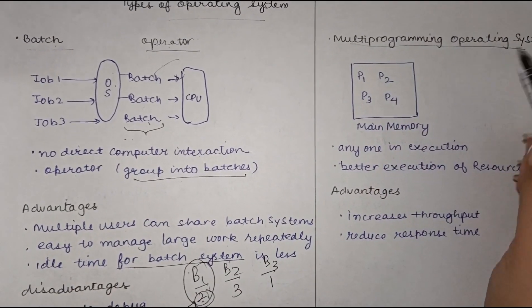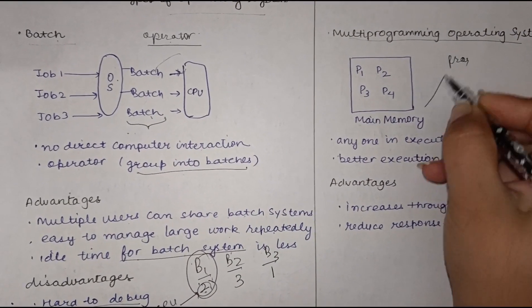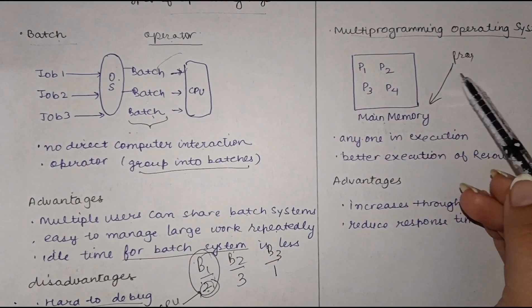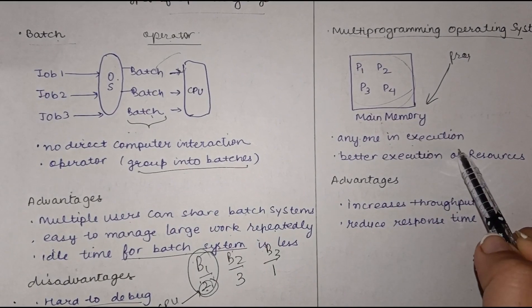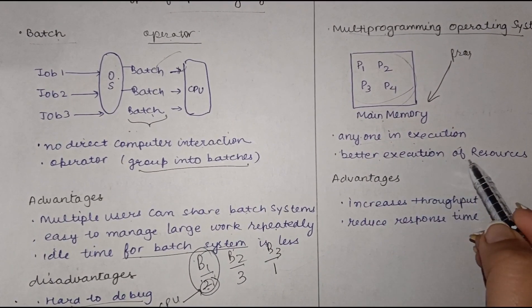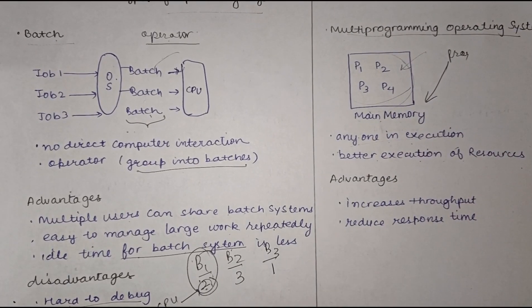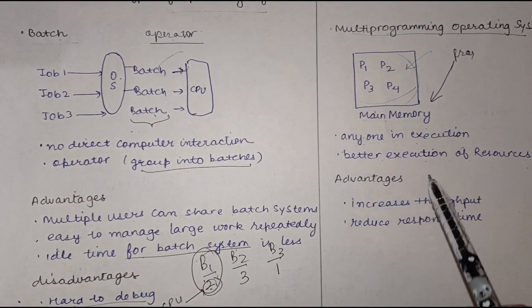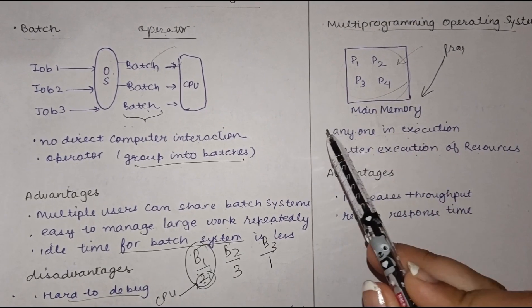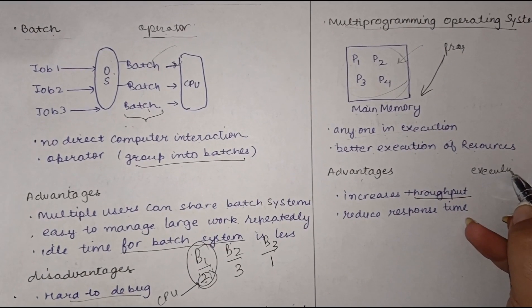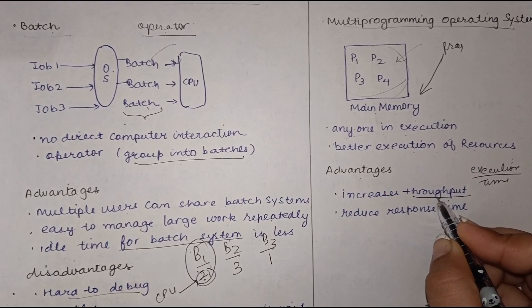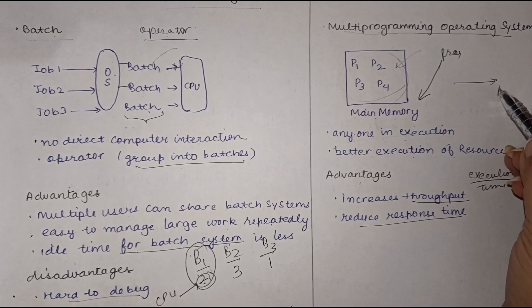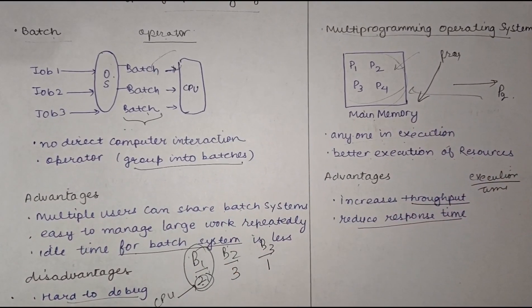Next is the multi-programming operating system. Multi-programming means many programs are loaded into the main memory simultaneously. At any one time, only one program is in execution, but having multiple programs already in main memory improves resource utilization because repeated input/output fetching from secondary storage is not needed. Advantages include increased throughput — the number of successful executions per unit time — and reduced response time, since programs don't need to be fetched from secondary memory repeatedly.